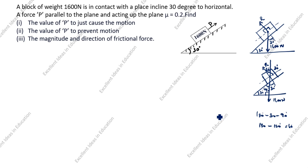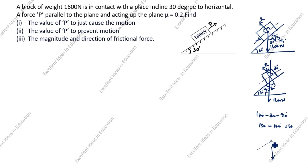Since R is perpendicular to the plane, we resolve the block weight into components. The component along the perpendicular direction is 1600 cos 30 degrees, and the component along the plane is 1600 sin 30 degrees.